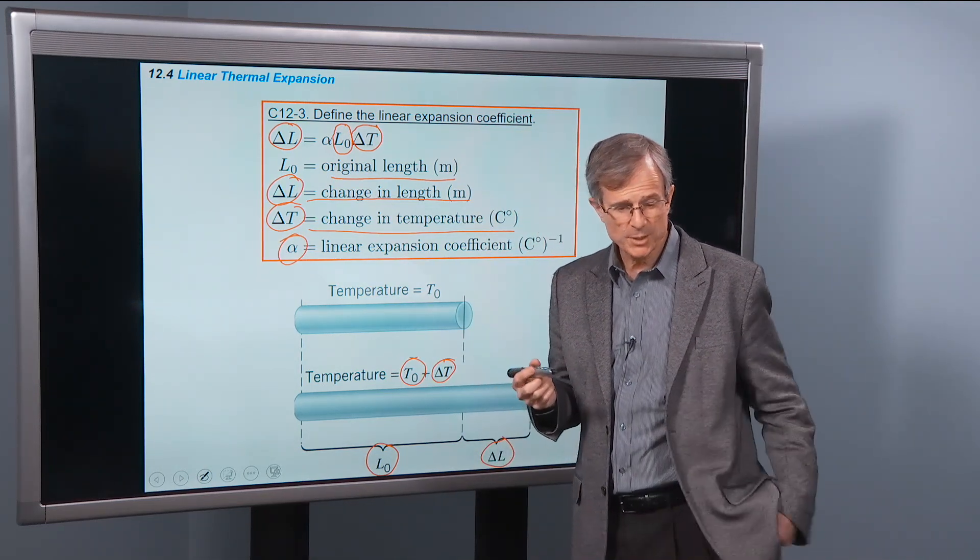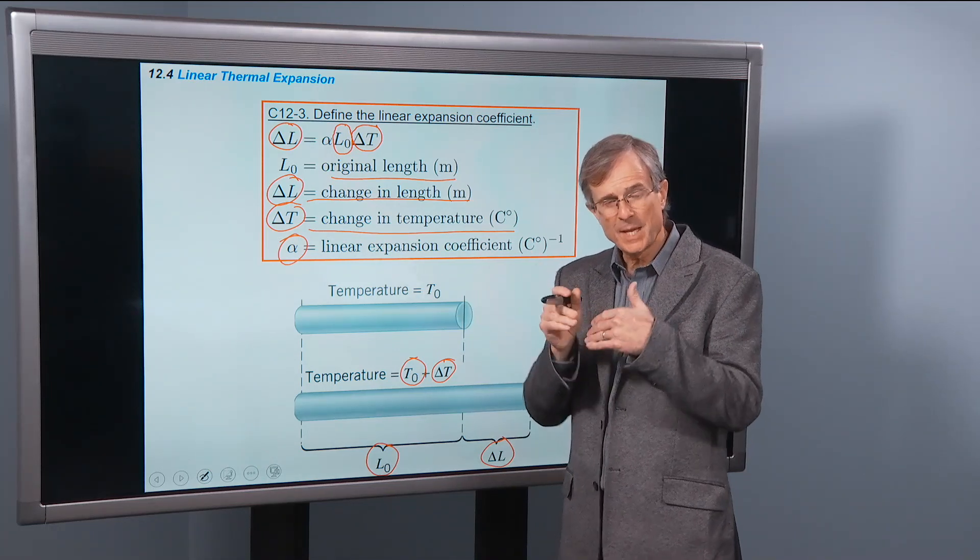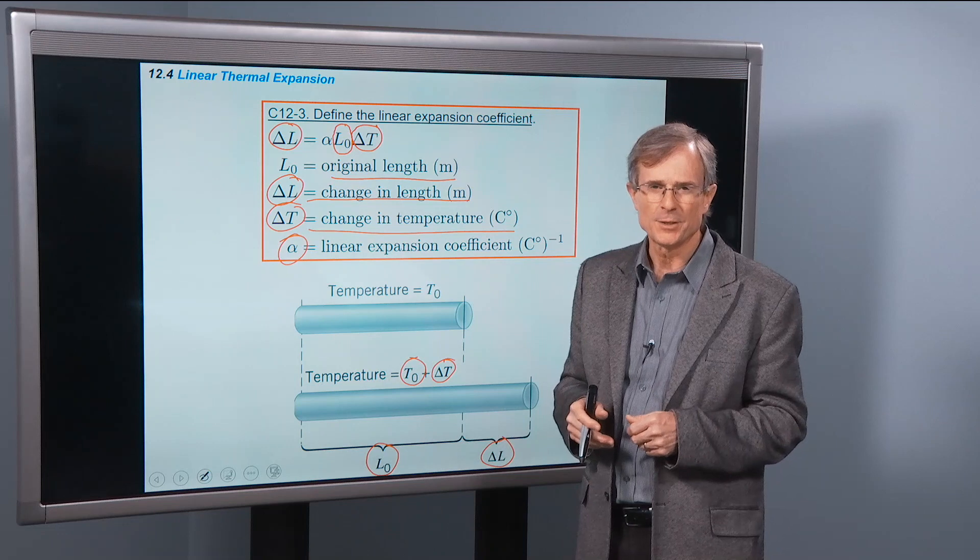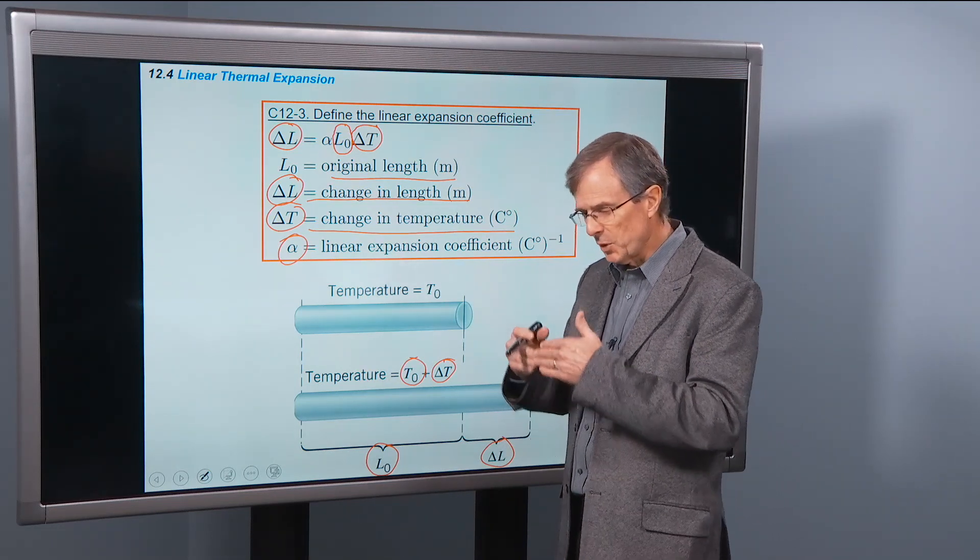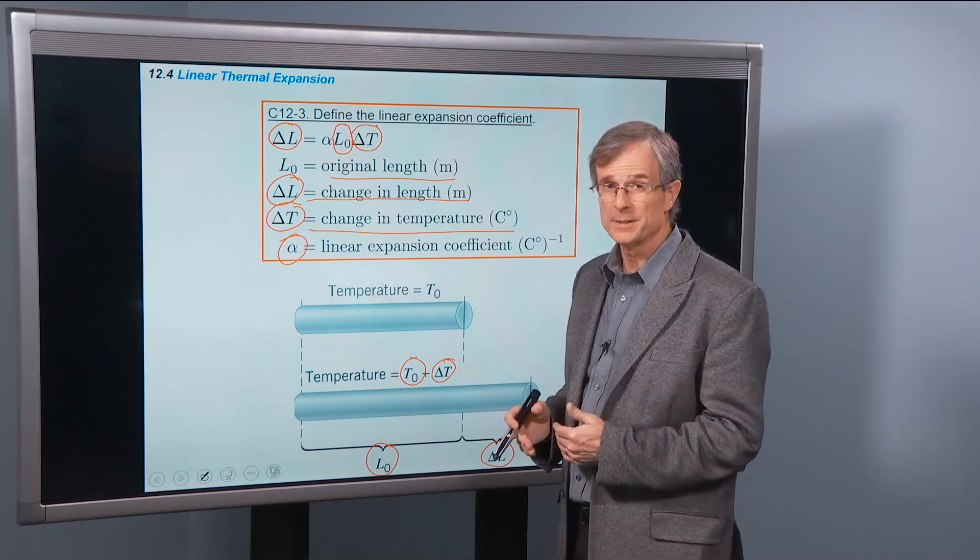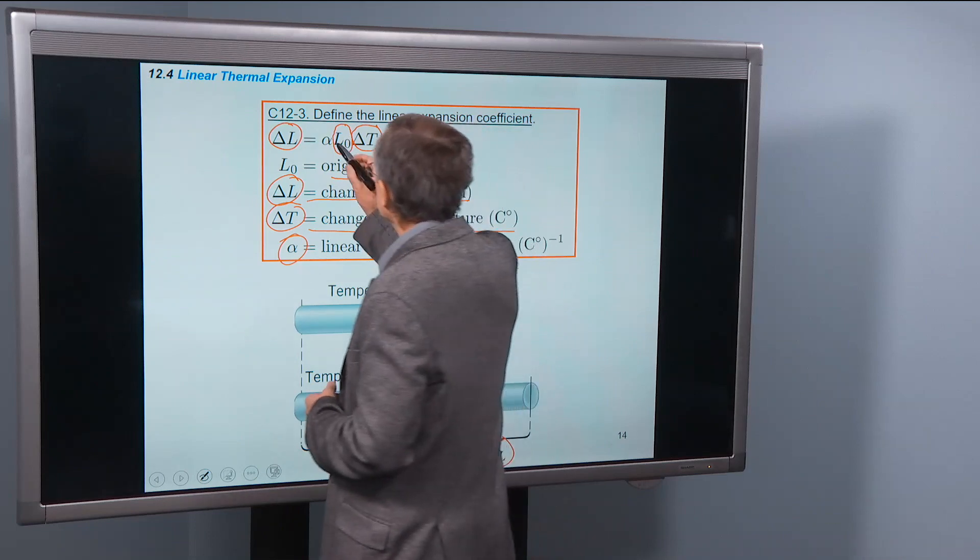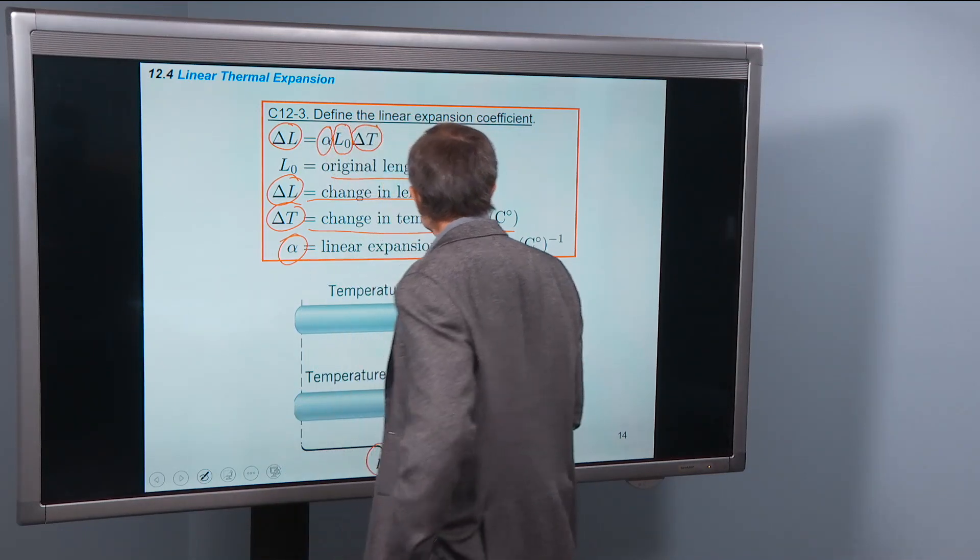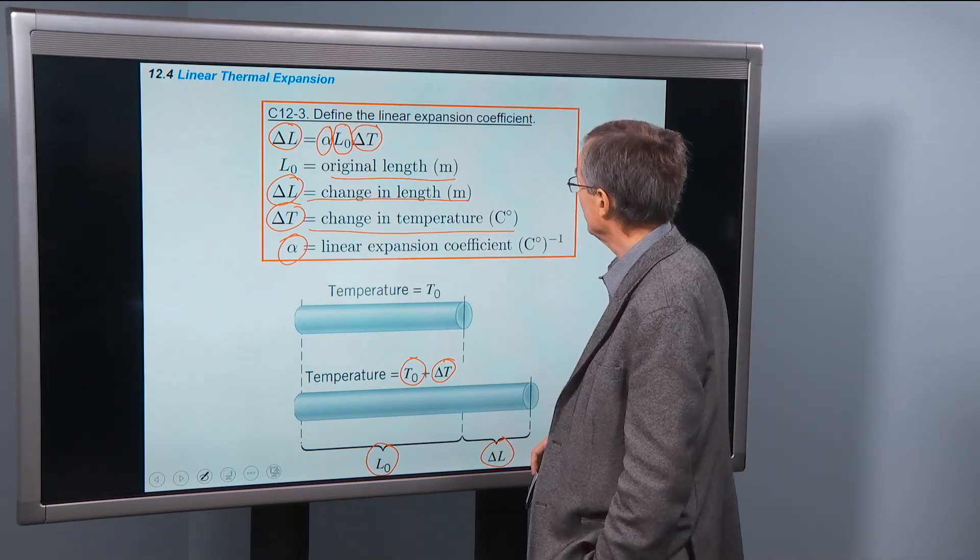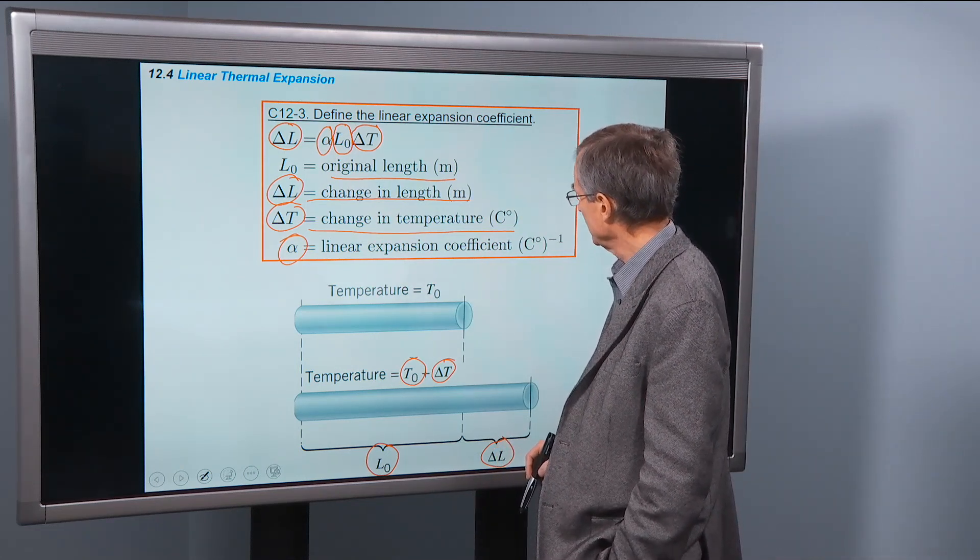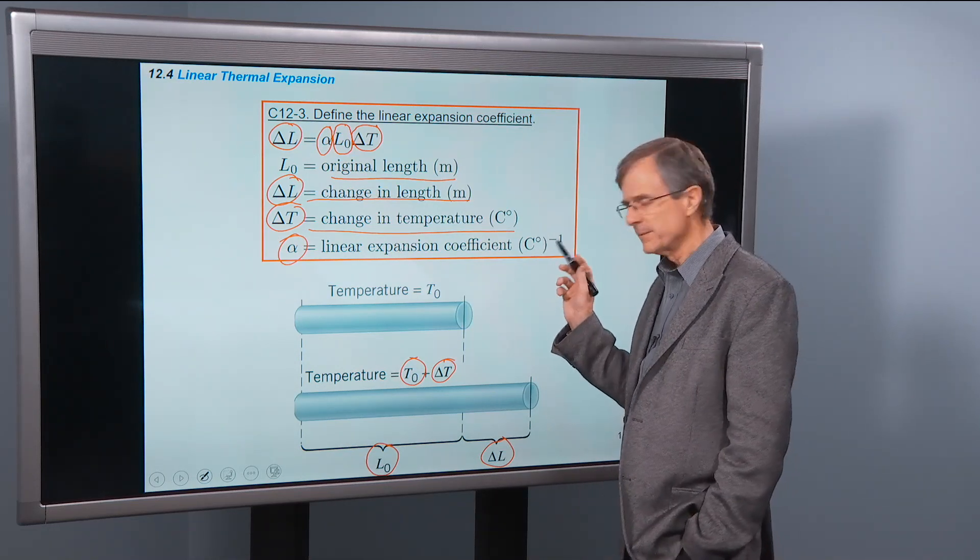But actually a change in temperature, a 1 degree C change, is the same as a 1 degree Kelvin change. So either way works just fine. They both step at the same rate, whereas the Fahrenheit steps at a different rate. Times a coefficient, it's called the linear expansion coefficient, thermal expansion coefficient.